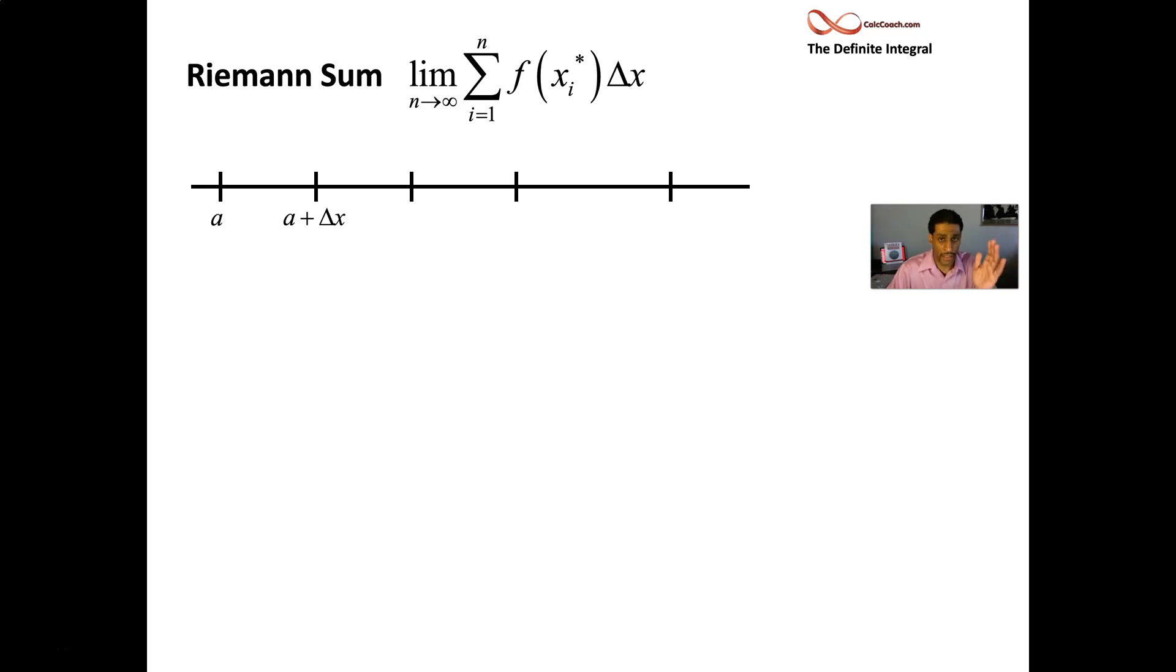Adding a second copy of delta x takes it to the second point, three copies to the third point. Generically, we have i copies of delta x, getting us to the i-th point, continuing until you get to b.